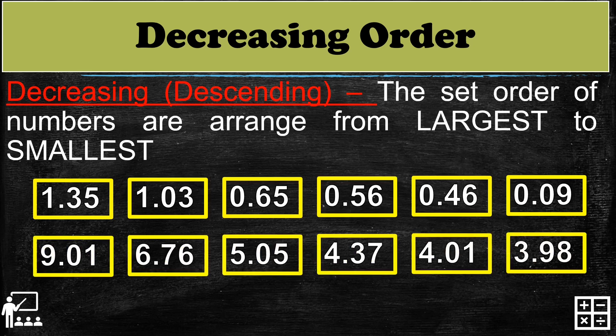Another example: 9 and 1 hundredths, 6 and 76 hundredths, 5 and 5 hundredths, 4 and 37 hundredths, 4 and 1 hundredths, and 3 and 98 hundredths. As you can see, the numbers are arranged from largest to smallest, so the order of this set is the decreasing or descending order.